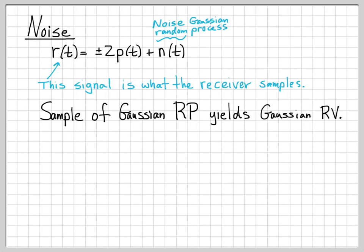When my receiver samples R(T), we're going to get either the number 2 or minus 2 from the deterministic portion of the signal, and some Gaussian random variable from having sampled the noise. So after sampling, I can think of my receiver as having received a random number R that is either plus 2 plus noise or minus 2 plus noise, where capital N is a Gaussian random variable obtained by sampling the Gaussian random process.